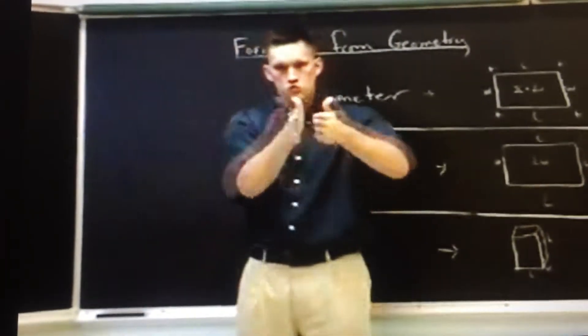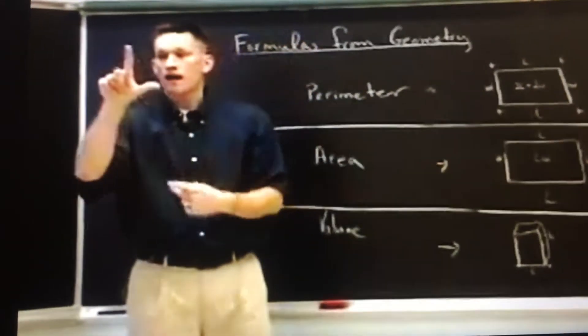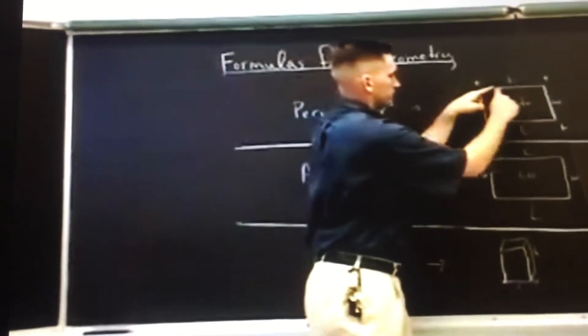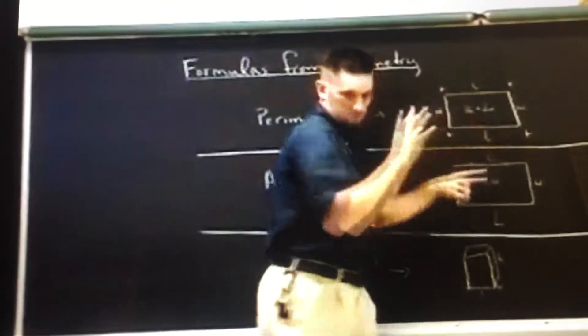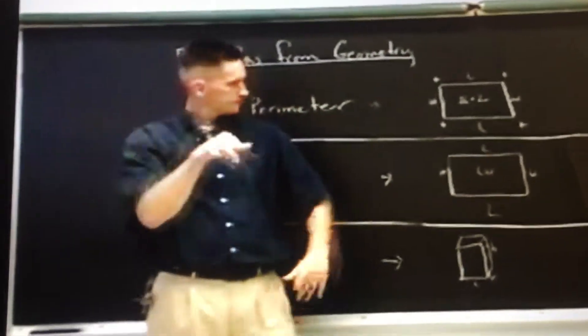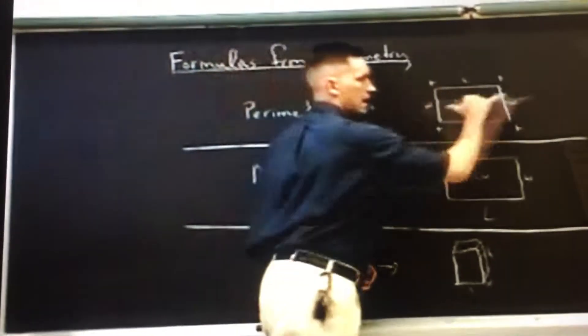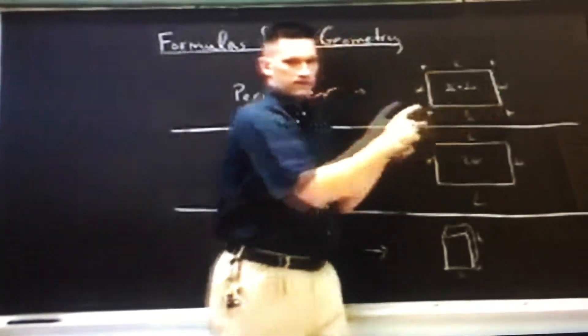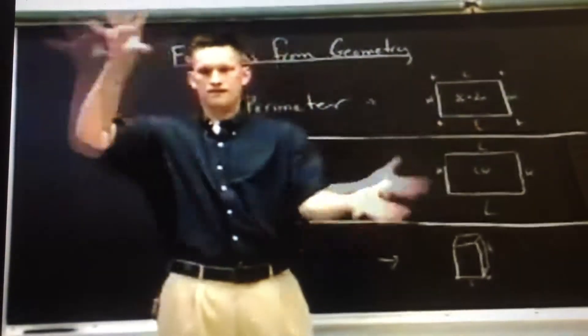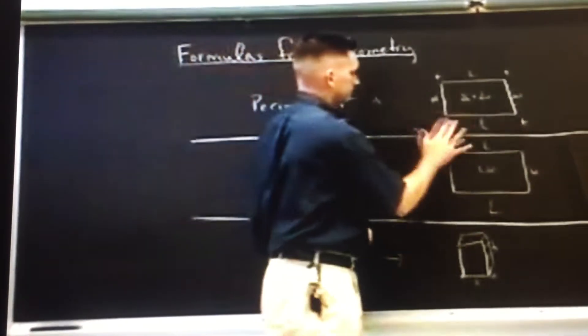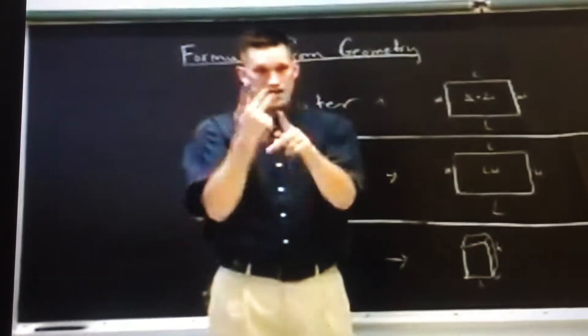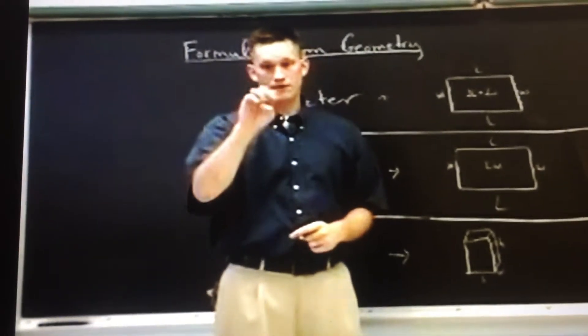So perimeter uses length and width. How wide something is and how long something is. See that's the length, width on the sides, length on the bottom. Each sides are the same. Left and right and up and down. See that here? And you add each of the sides together to get the perimeter. I'm going to erase the pluses now because we know what to do.